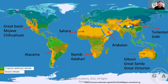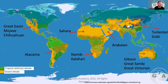Looking at the desert climate, we have the Atacama desert covering areas of Peru, Bolivia, and Chile; the well-known Sahara — the biggest in the world; the Namib and Kalahari deserts; the Great Sandy and Arabian deserts; the Gobi desert; and the Mojave desert along with other minor deserts in those areas.